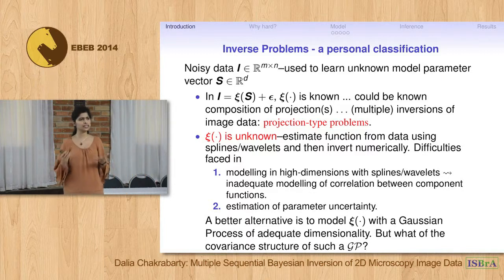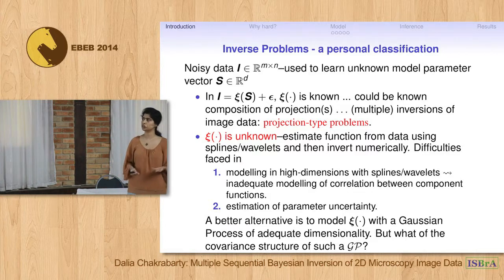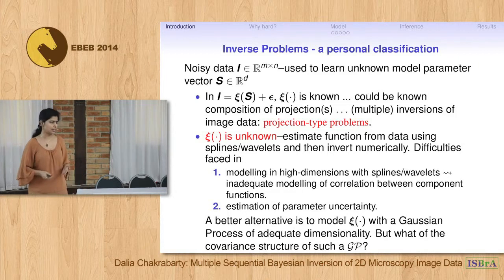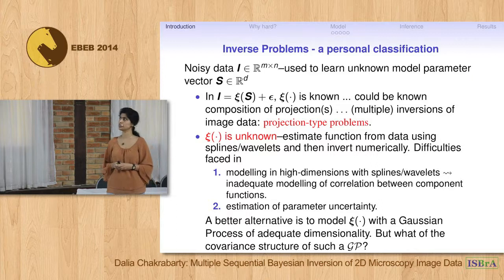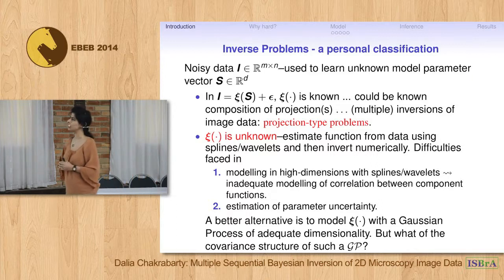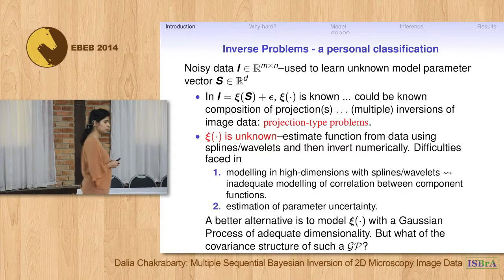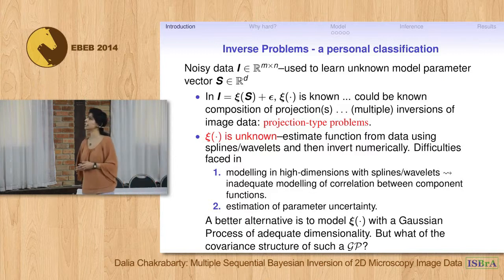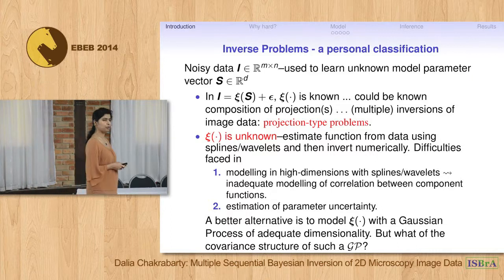In type 1 problems, because the function is known, you can directly invert it and operate on I to get an estimate of S. In type 2 inverse problems, this functional relationship between I and S is not known, so you have to learn it. You could use a Gaussian process of appropriate dimensions to learn it, or if so inclined, splines and wavelets — hopefully only in lower dimensions.